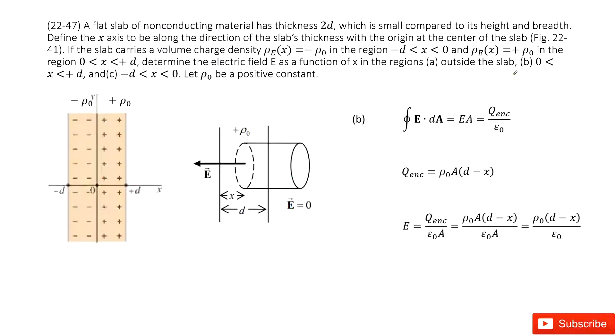The second part asks for the electric field from x = 0 to positive d. So in this case, we can draw the Gaussian surface like this one. Because we know the outside electric field is 0, the electric field for this region is just from this side, with area A.